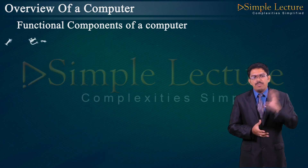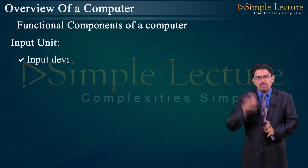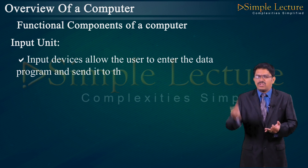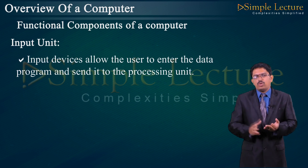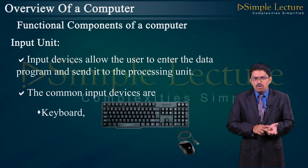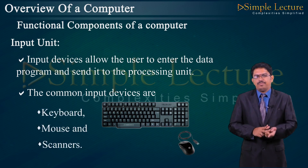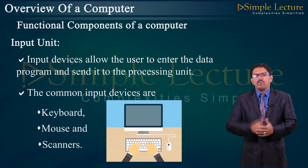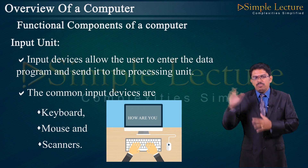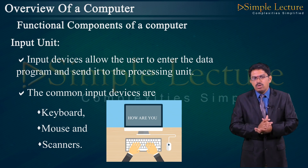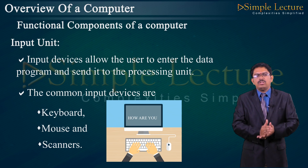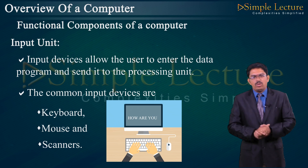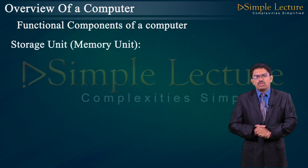The first unit is the input unit. Input devices allow users to enter data and programs and send them to the processing unit. Examples include keyboard, mouse, and scanner. For example, typing 'how are you' on the keyboard causes the characters to be displayed on the screen.